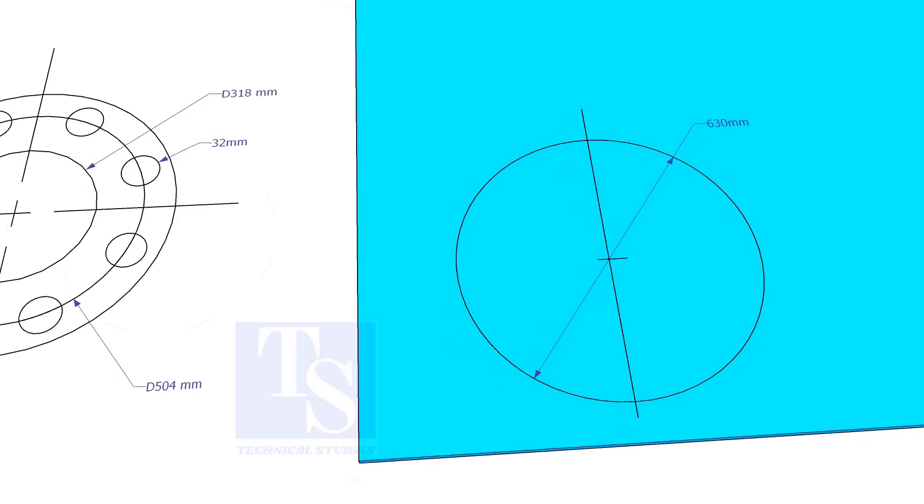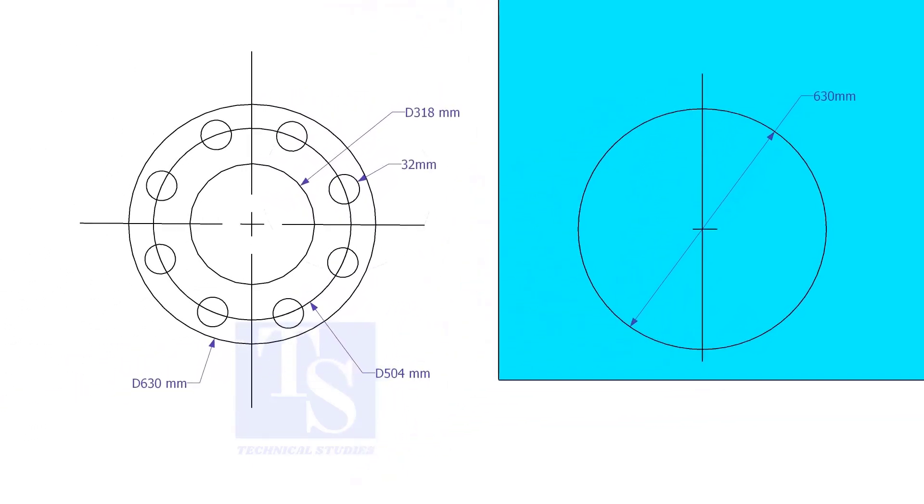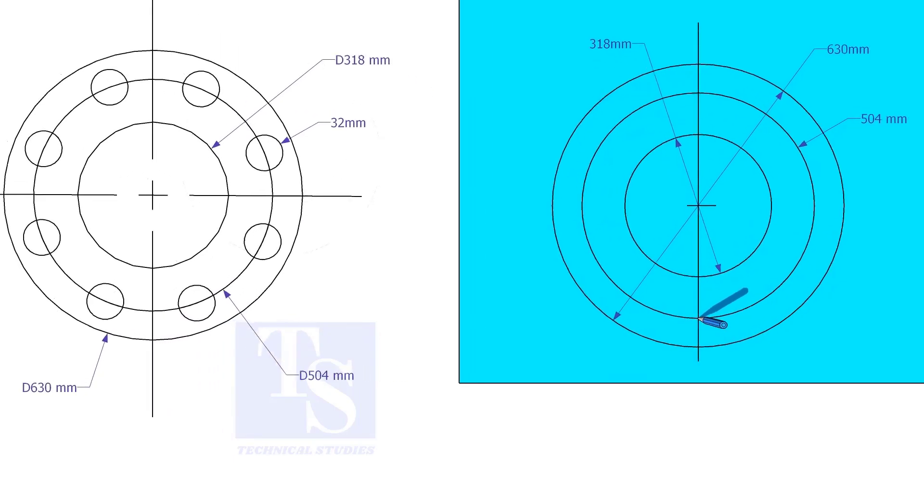Draw the OD and the ID circles. Draw the PCD. Punch mark where the PCD circle cuts the center line.